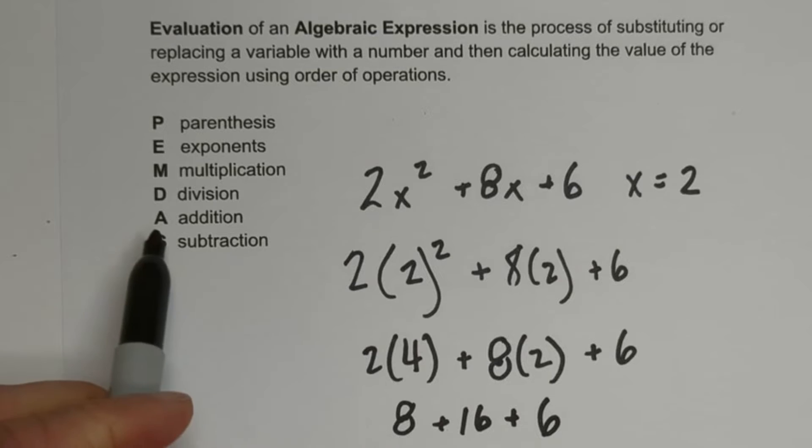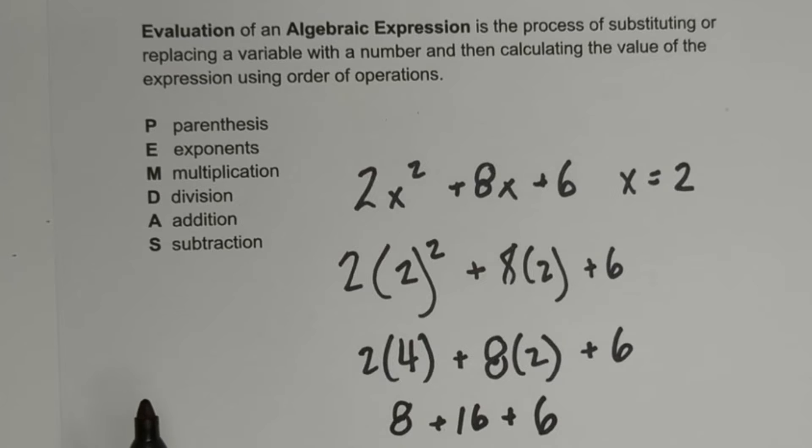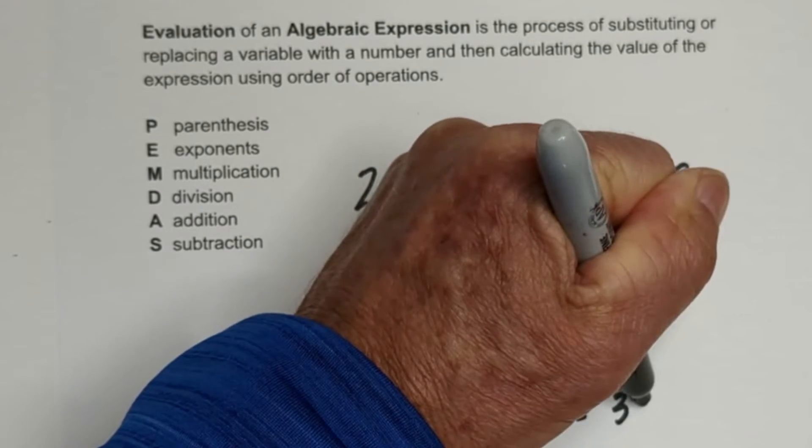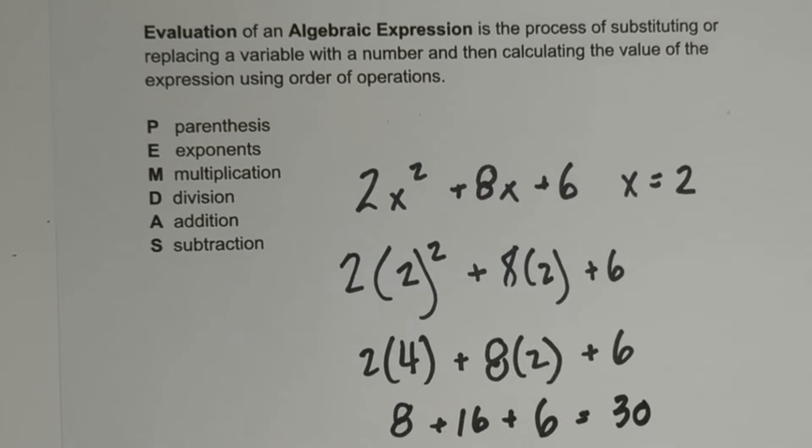And now we're down to addition, so we just add this. When you add 8 plus 16 plus 6, that gives you 30. So there's the first one.